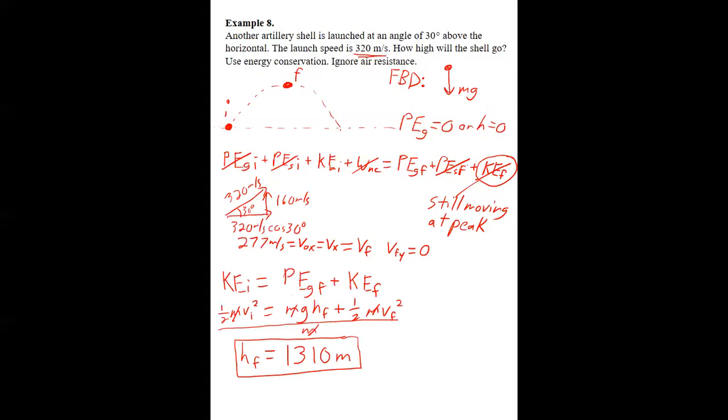And so we did this problem when we found that the shell went 1,310 meters instead of 5,000 meters when it was launched straight up. And so if it's launched at this angle, what does the energy bar chart look like? Well, at the beginning, it has only kinetic energy.